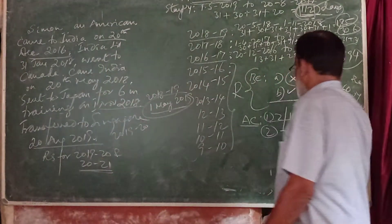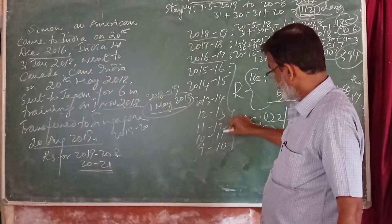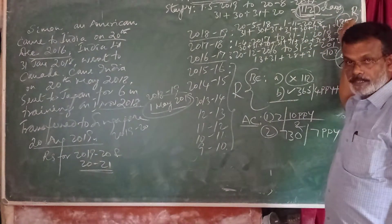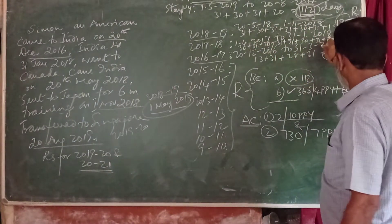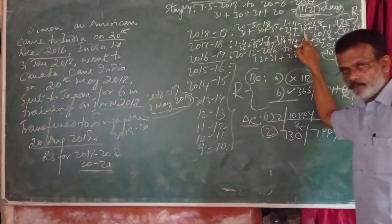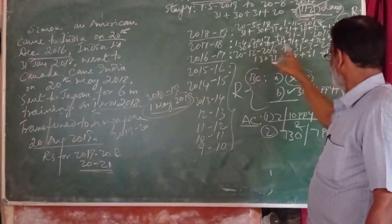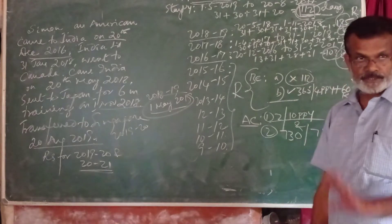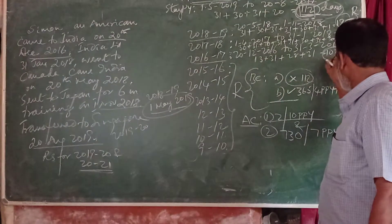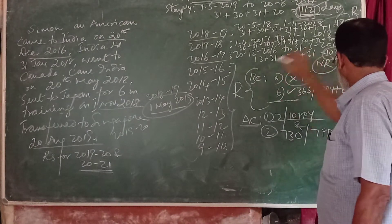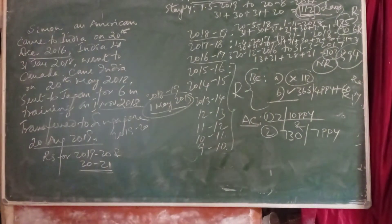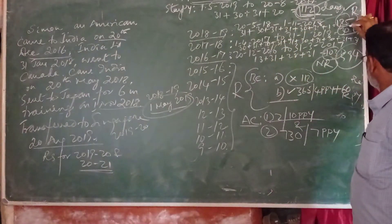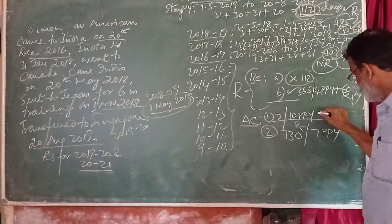He must be resident for 2 years out of 10 preceding previous years. Checking the 10 preceding previous years: in 2018-19 he was a resident because he stayed in India for 185 days satisfying the basic condition. In 2017-18 he was a resident because the first basic condition is satisfied. During 2016-17, he was in India only for 103 days, and for earlier preceding previous years he was not in India. Hence, for 2016-17, he was a non-resident. So during 10 preceding previous years, he was a resident for 2 years — the first additional condition is satisfied.